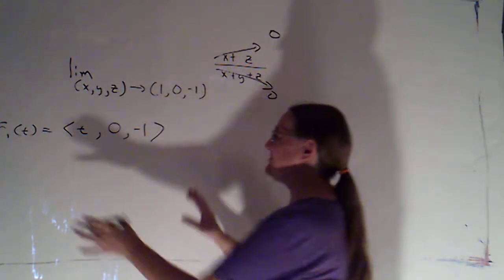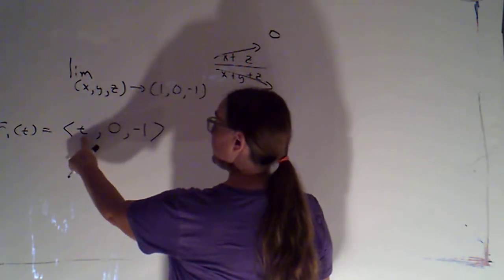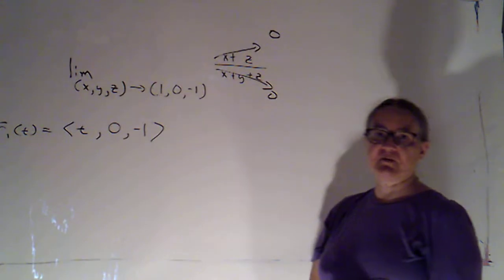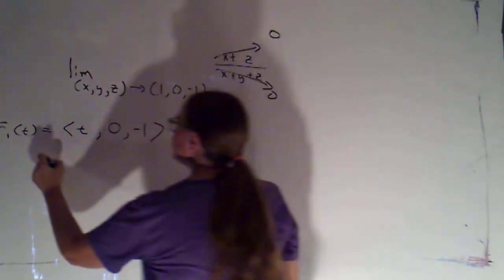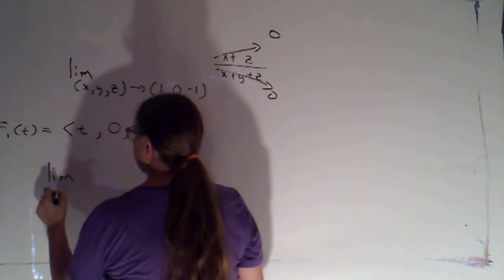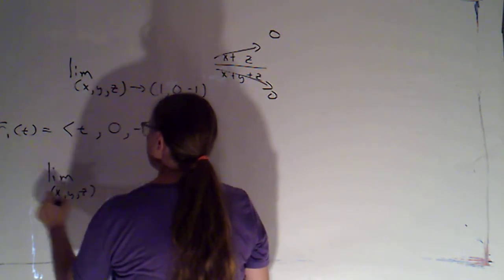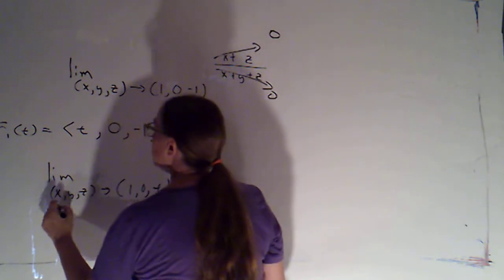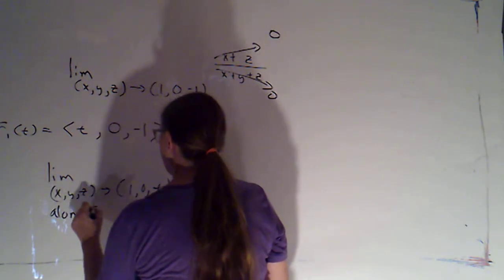I do need to make sure when I'm choosing my path, there is a value of t, in this case if t is 1, that would put me at that location. So we'll try the limit as (x, y, z) approaches (1, 0, -1) along R1(t).